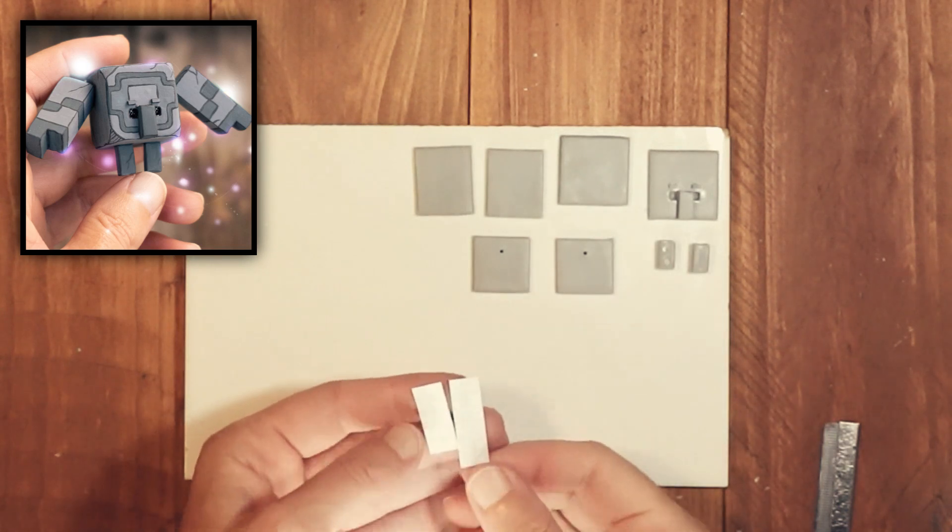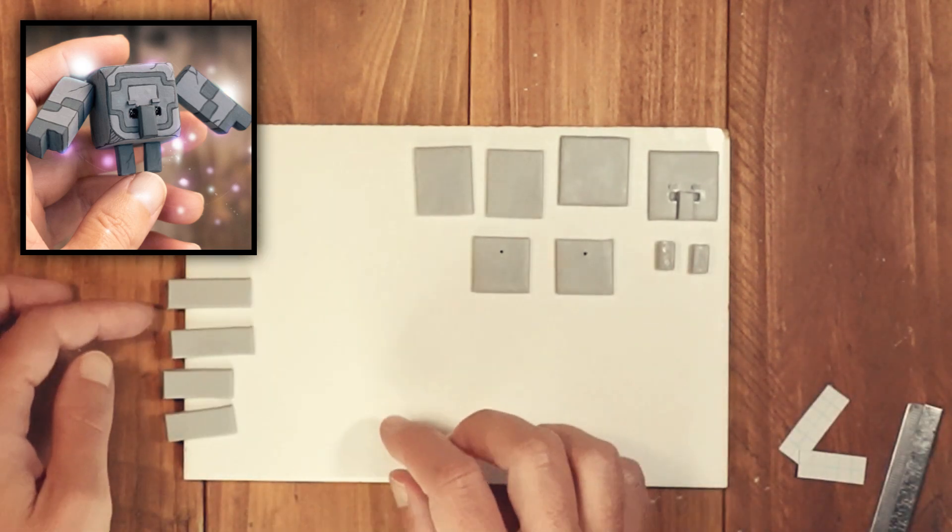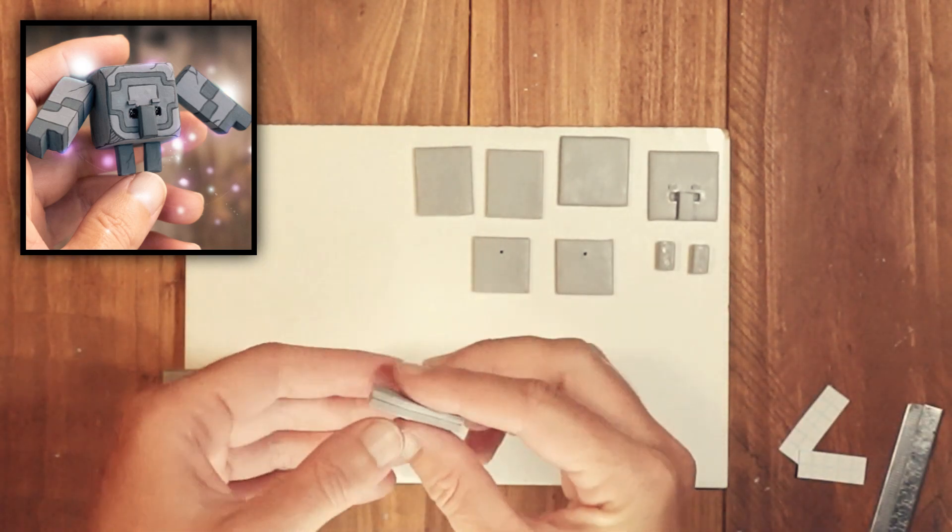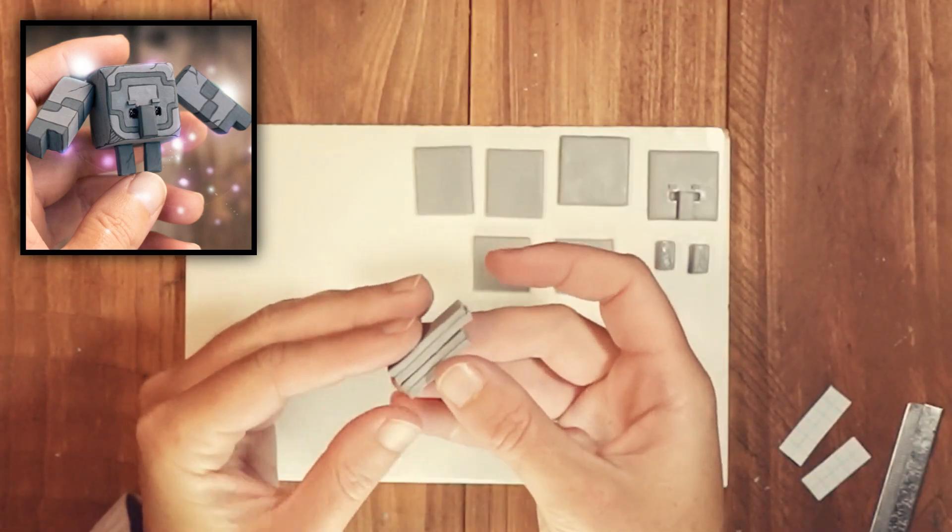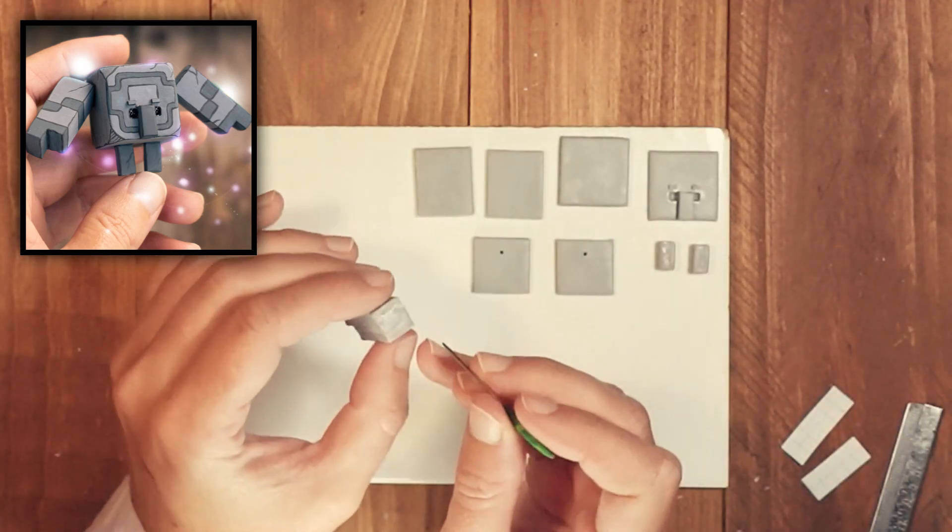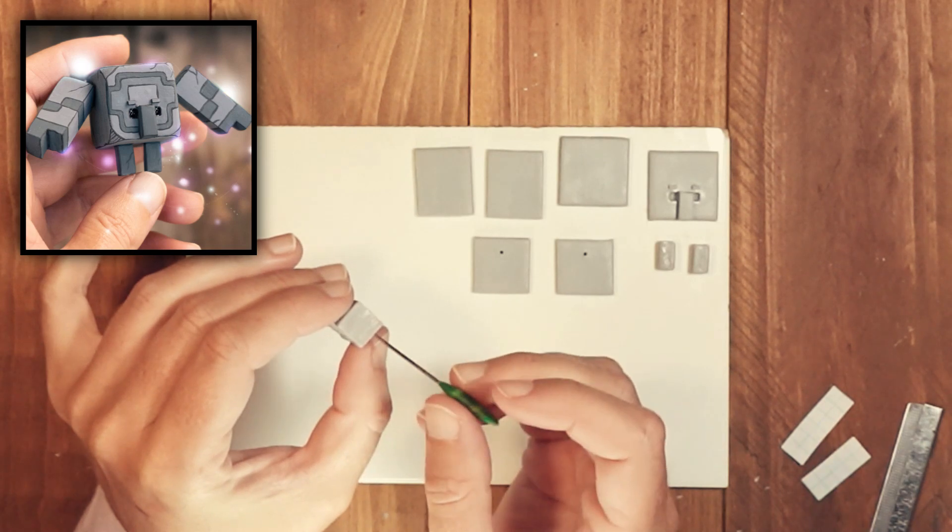Each arm is stepped and you will need two of these for each arm. Stack the two long ones, then the two short ones. Then place the two together. Blend all the joins and add a pinhole diagonally to attach later.